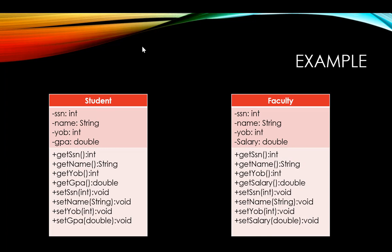Now if we pay close attention to our classes we'll see that we have a lot in common between the student and faculty. We have three instance variables that are in both: the social security number, the name, and the year of birth. We also have the methods associated with these variables available in both classes — six methods in common.